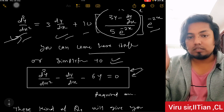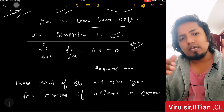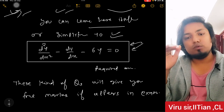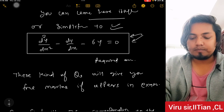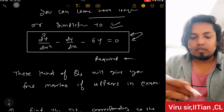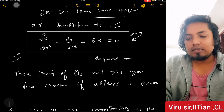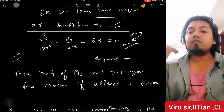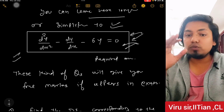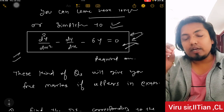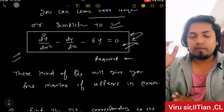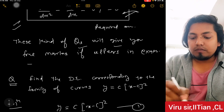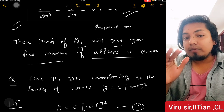After substituting B, simplify the expression to get the required differential equation. Pause the video and try this yourself. In the final equation, A and B are not present — that is the true meaning of a differential equation. No arbitrary constants should remain. These kinds of questions will give you free marks if they appear in the GATE exam.